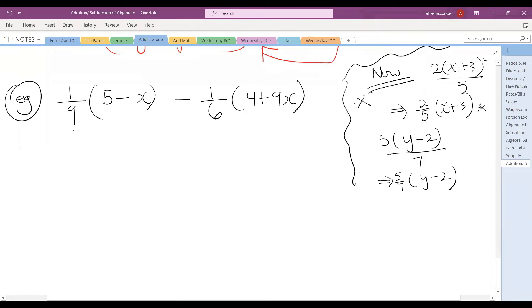So if we watch the format on this side, we'll see that 2 by x plus 3 over 5 can be written as 2 over 5 by x plus 3. So 5 by y minus 2 over 7 can be written as 5 over 7 by y minus 2. So we are doing this question and we're following the fractions format. So 1 over 9 can be written as 5 minus x over 9. If we want to put the brackets like this, but the 1 isn't necessary.